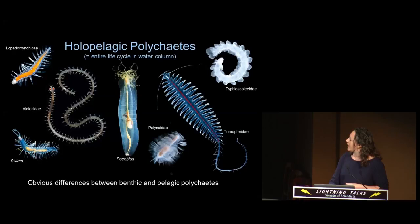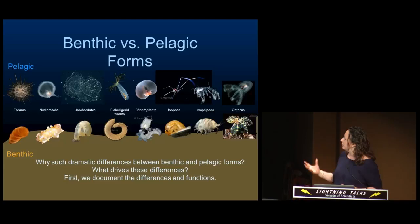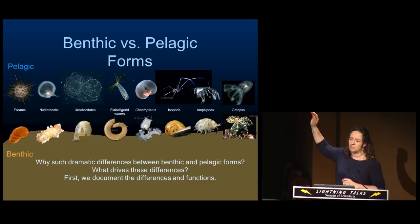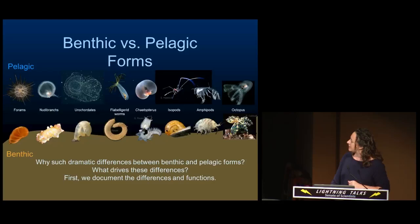If we extend this comparison a little bit further into other animal groups, most animal groups have some sort of pelagic examples — there are only about three phyla that don't. What we find is that those dramatic differences in morphology or in form extend to all of these other groups. I'm interested in why we find those differences and what is driving those changes.